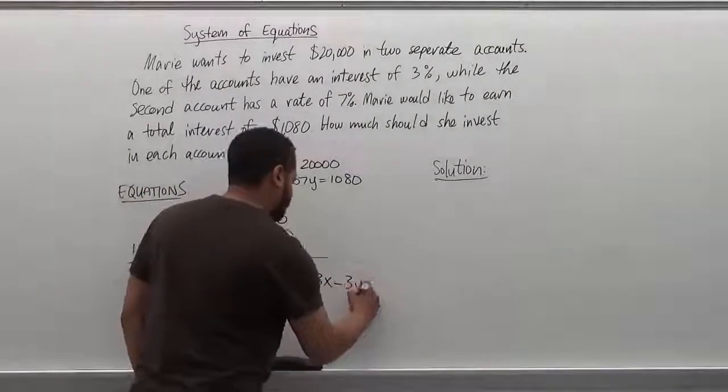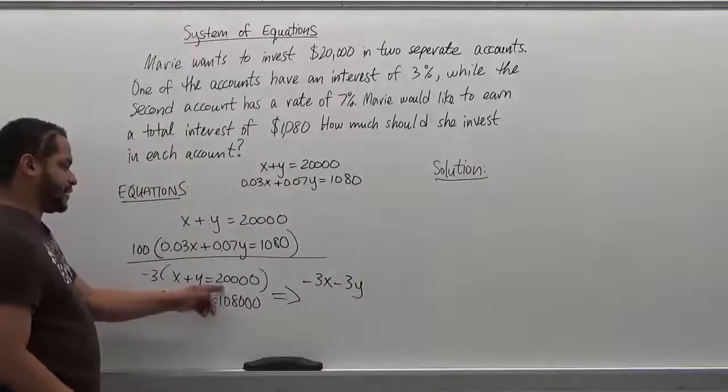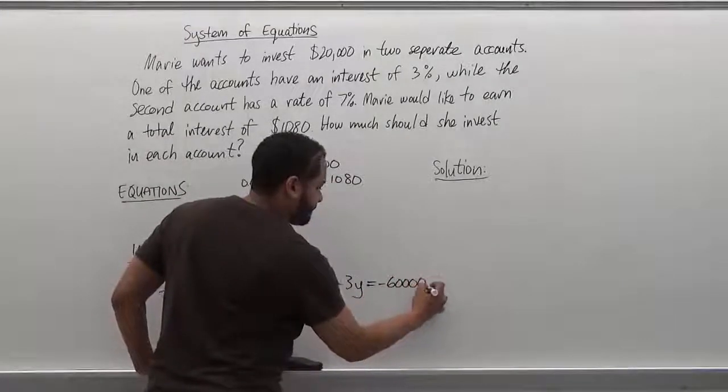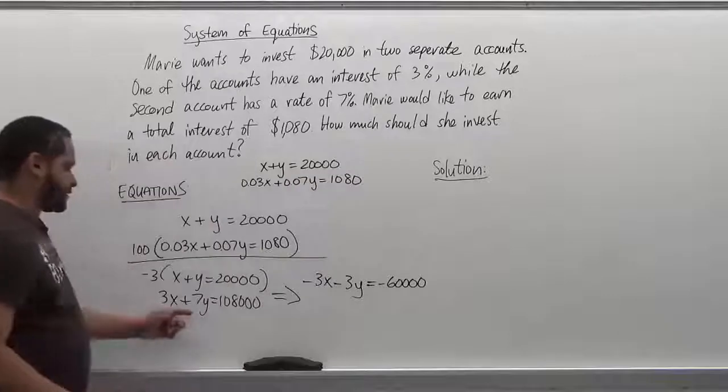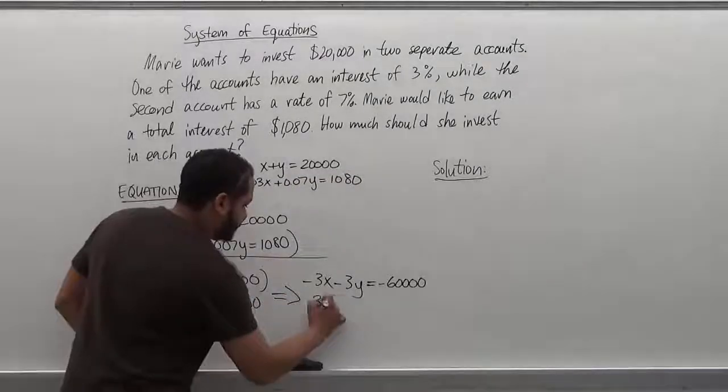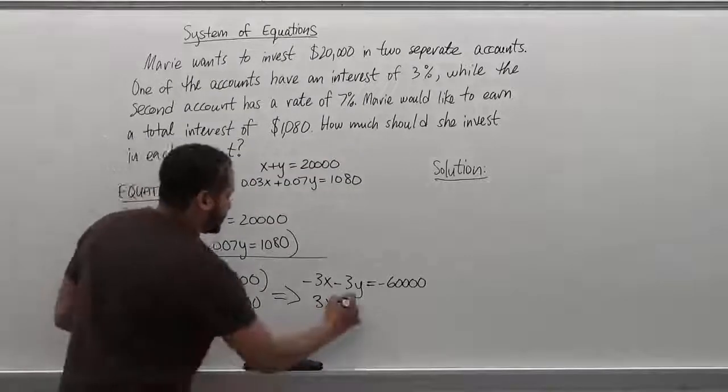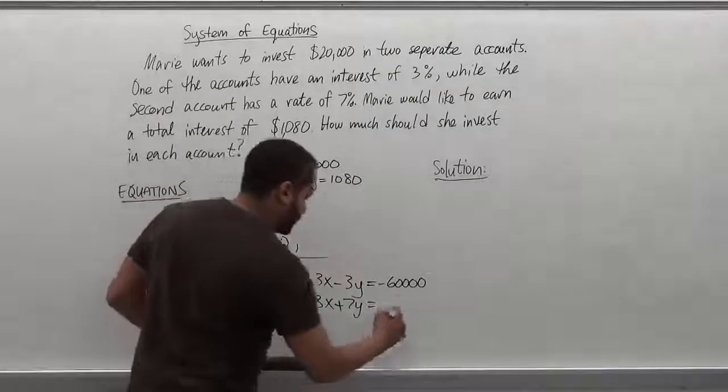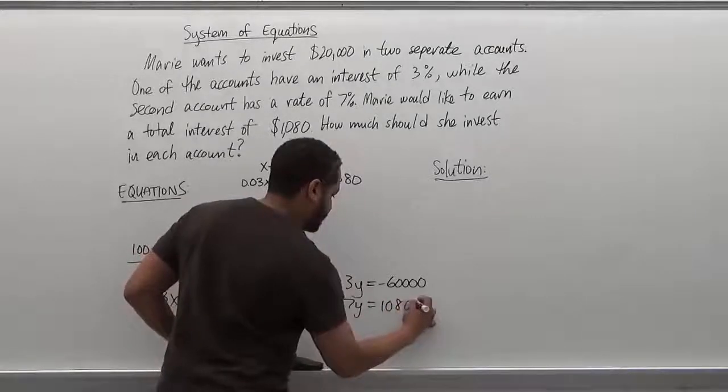I'm going to keep everything the same here because now my 3x and negative 3x are opposites. So I have 3x plus 7y equal 108,000.